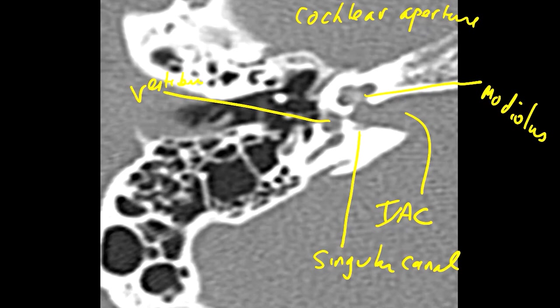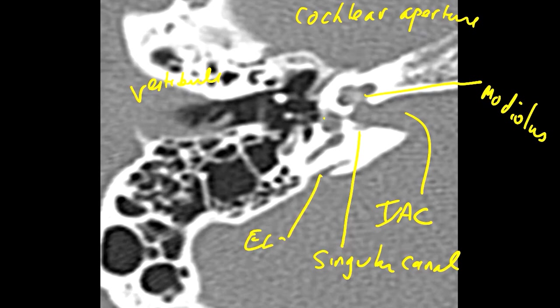We have the vestibule here — the entrance into the labyrinth — and if we look carefully we can see the turns of the crura of the stapes. This is the anterior crus of the stapes, this is the posterior crus, crura being the plural, and you have the capitellum of the stapes right here. So this is going to be our oval window. We talked about the round window leading into the basal turn of the cochlea; this is the oval window in which the stapes sits and inserts on the vestibule. Again we have the endolymphatic sac or vestibular aqueduct.